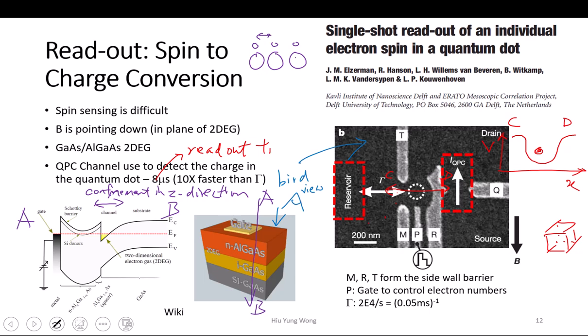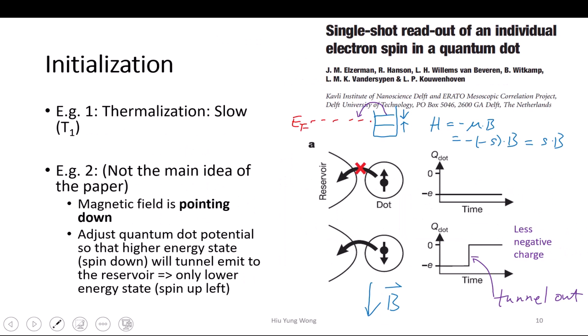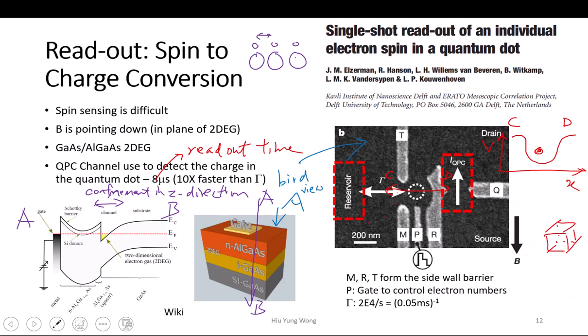And luckily that is usually the case, in that order. This quantum dot is also coupled to the reservoir — it can tunnel in and tunnel out, similar to this picture. And that is how we do the spin-to-charge conversion. So let us take a look at how we do it.